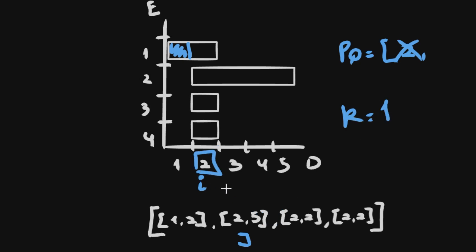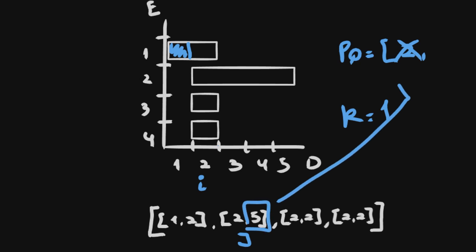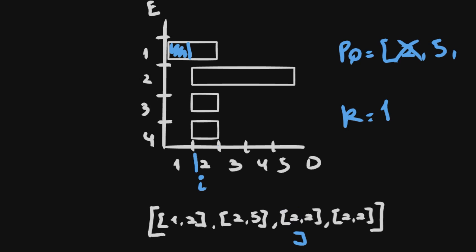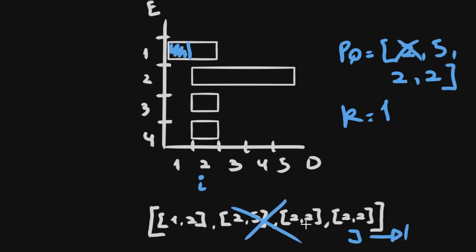Now we're at day two. We check if the start day for the current event equals the current day — two equals two — so we add its end day, five, to the priority queue. We update j, and the next two events also start on day two, so we add their end days (two and two) to the priority queue as well. Now at day two we need to attend one event. We have three values in the priority queue, so we pop the smallest one. We add one to the result — this is now two — meaning we attend that event.